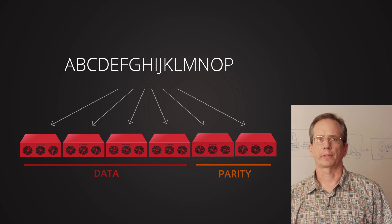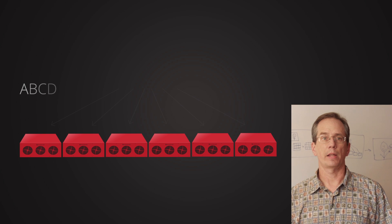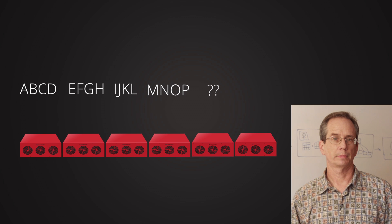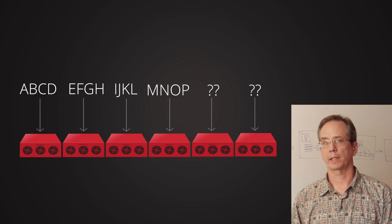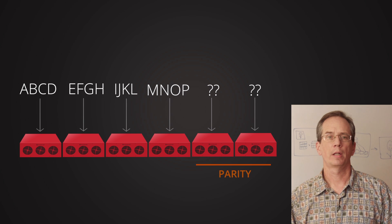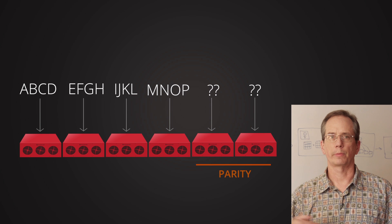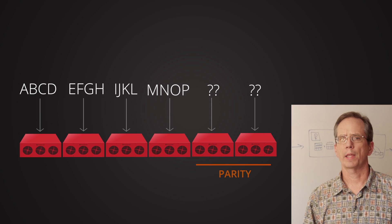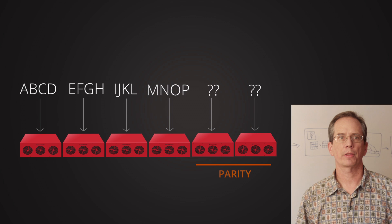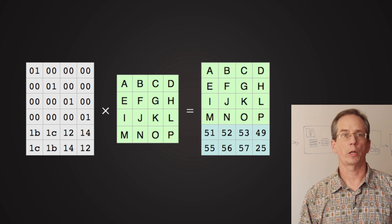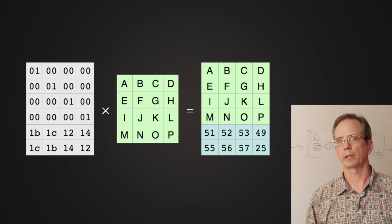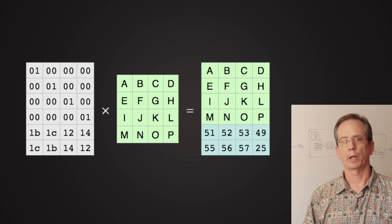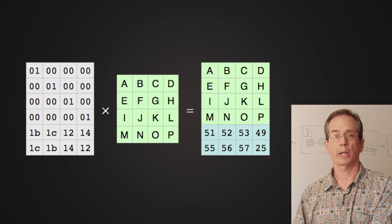Basically, in this example, I've got a file with the letters A through P, and I'm going to break it up into four pieces, four letters each file, and then calculate two parity shards that can be used to recalculate the original file. And the way that happens is through the magic of math. We take what we call an encoding matrix and multiply it by the original data to come up with the original data plus the parity that we're going to store.